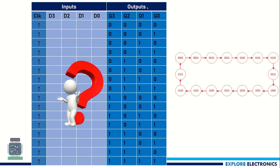The output of the counter will be 0 first, then 1, then 2, going up to 15, and again it will come back to 0. That is what the state diagram shows. The state diagram gives the states of the counter: initially it is 0000, then it goes to 1, 2, 3, 4, 5, 6, 7, 8, 9, 10, 11, 12, 13, 14, 15, and again it comes back to 0.